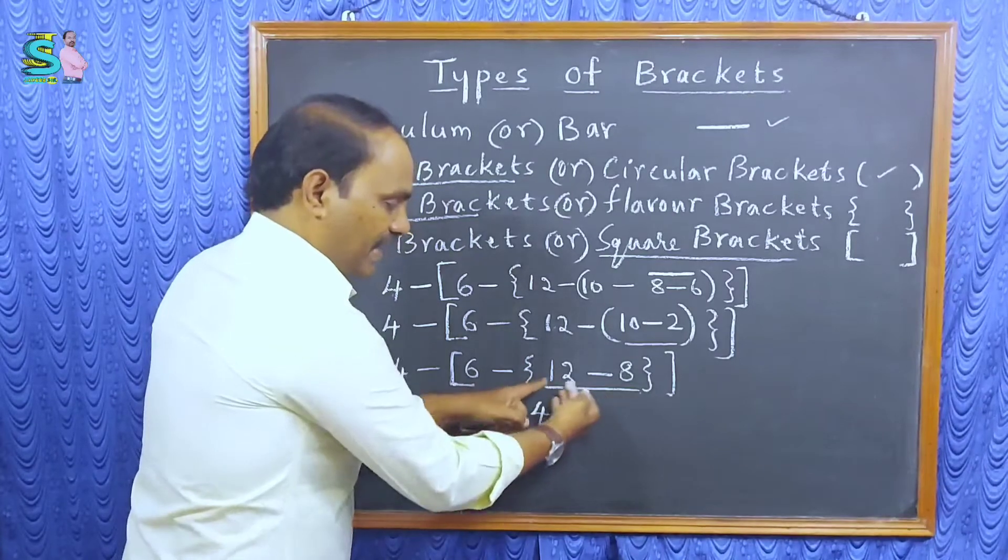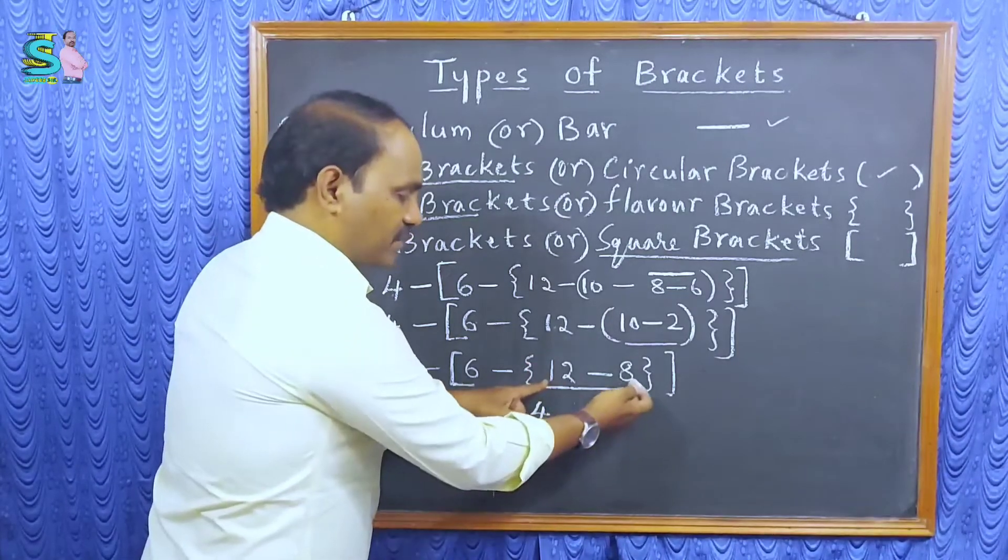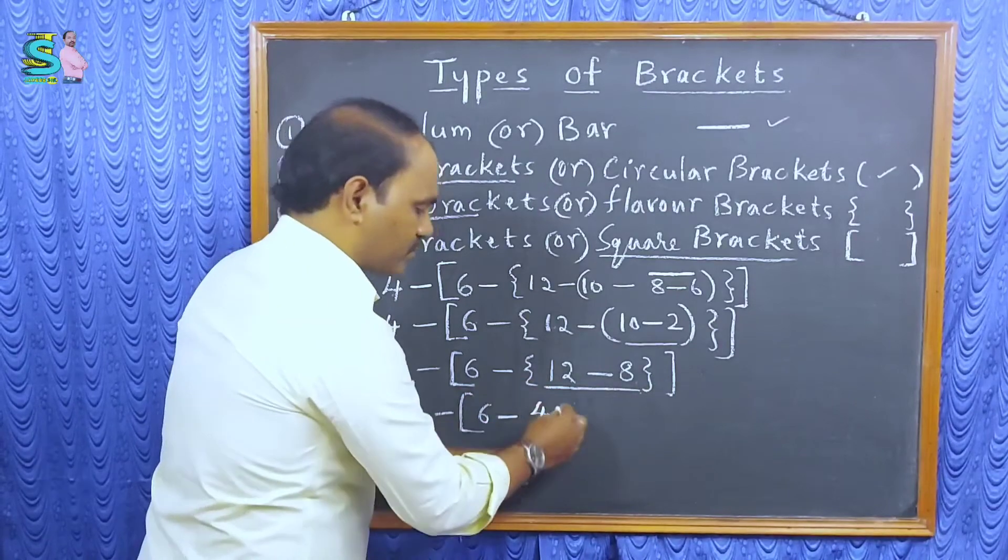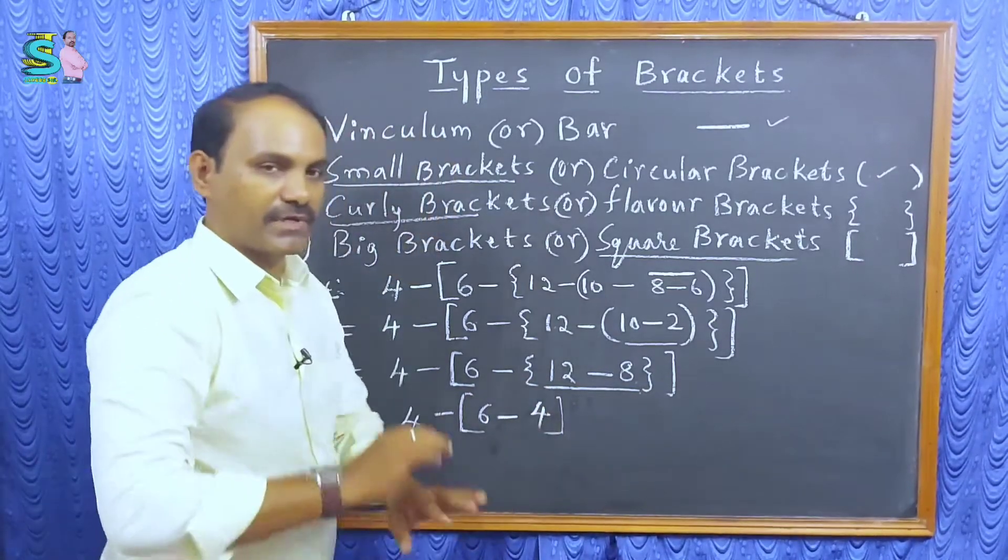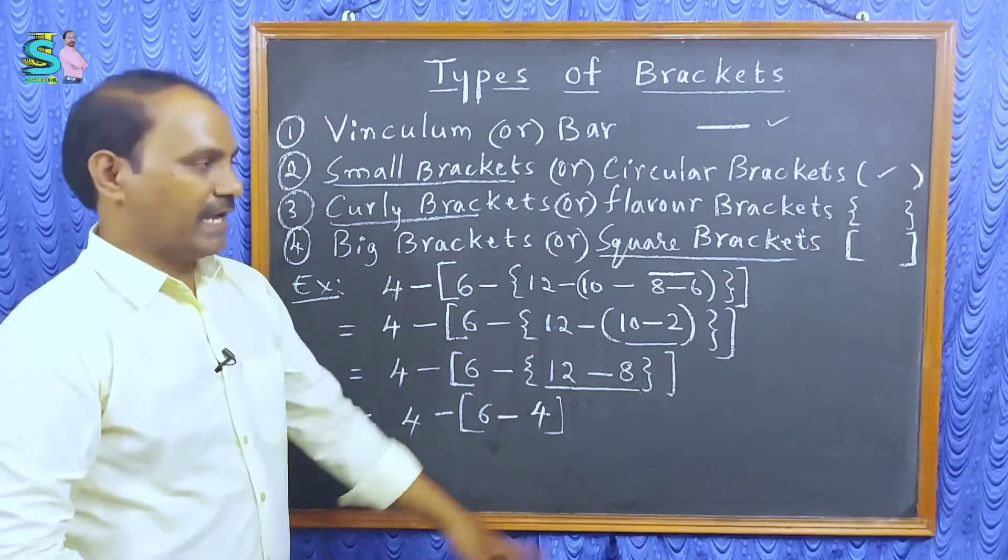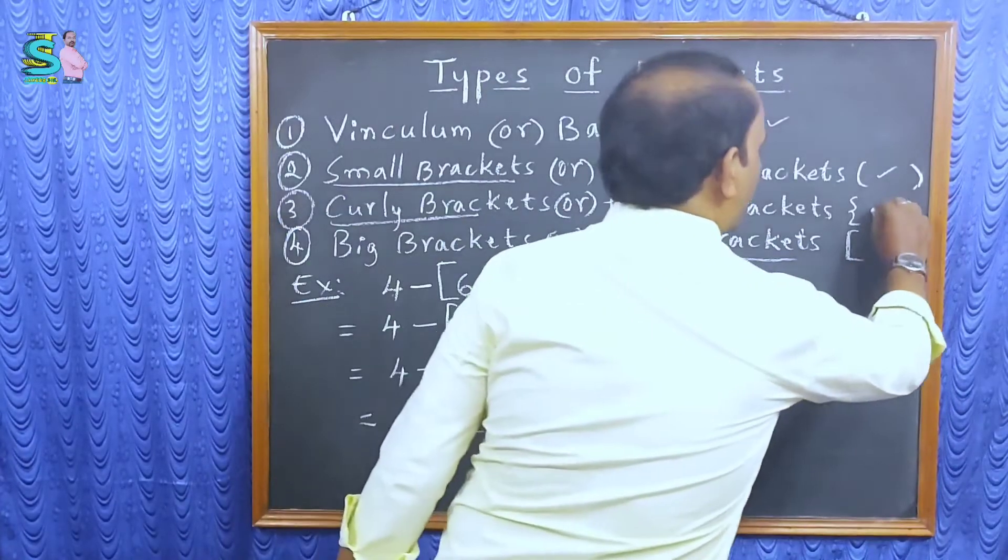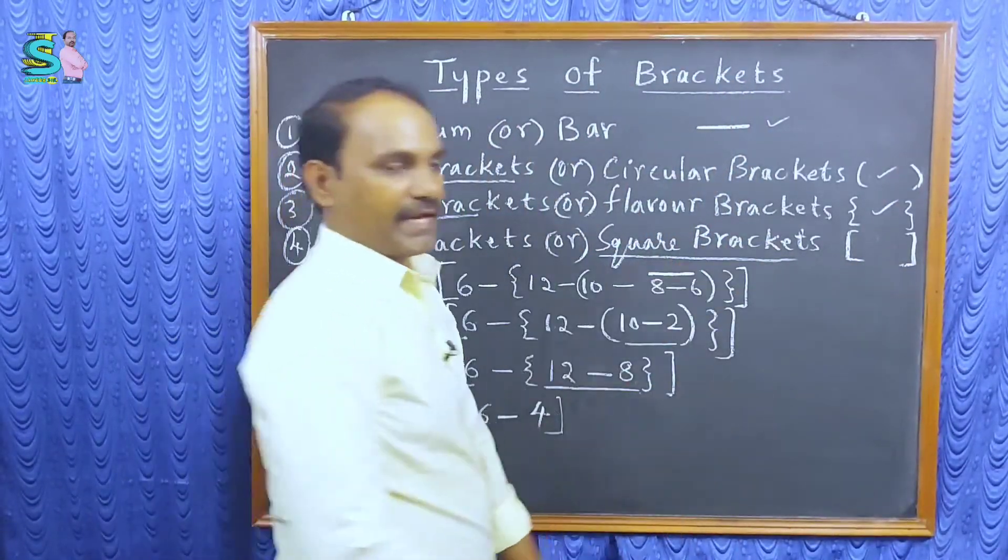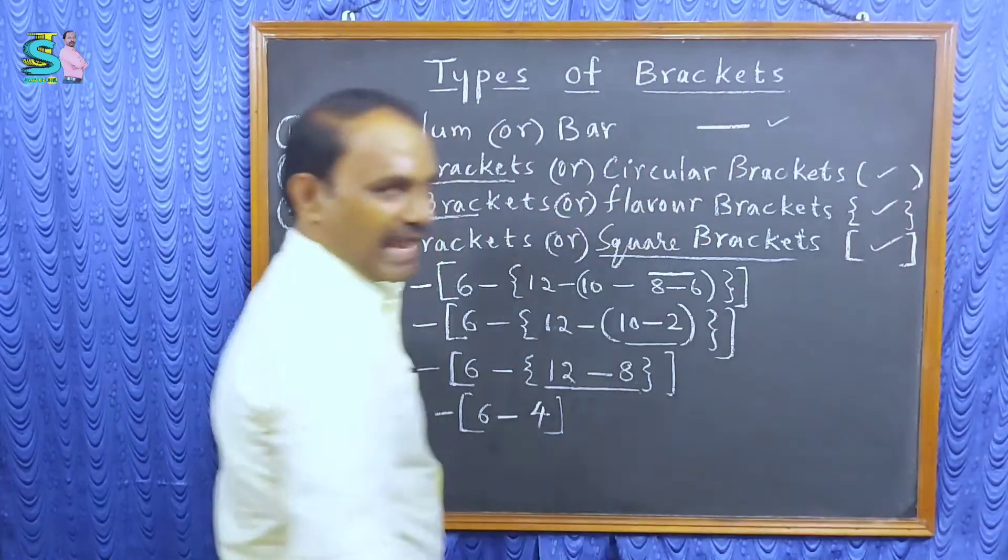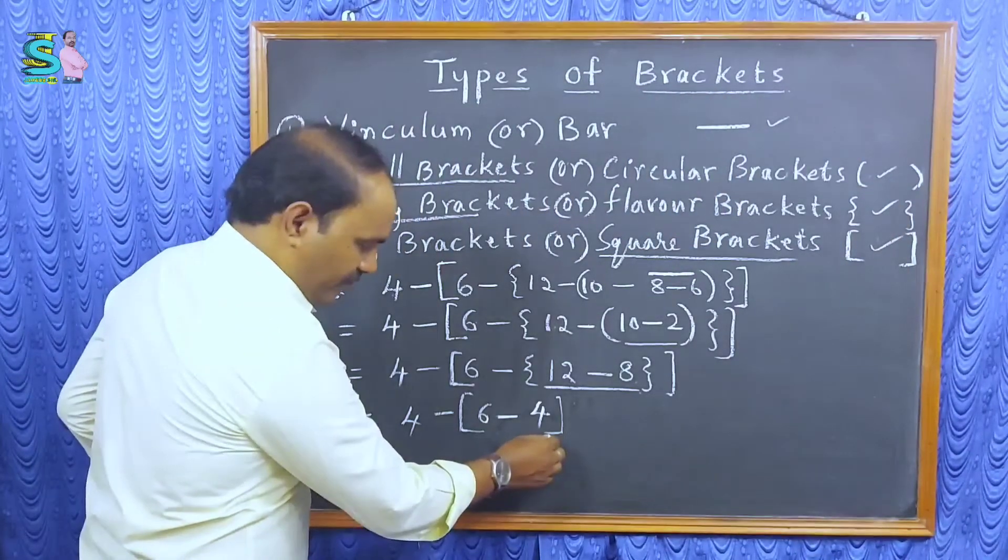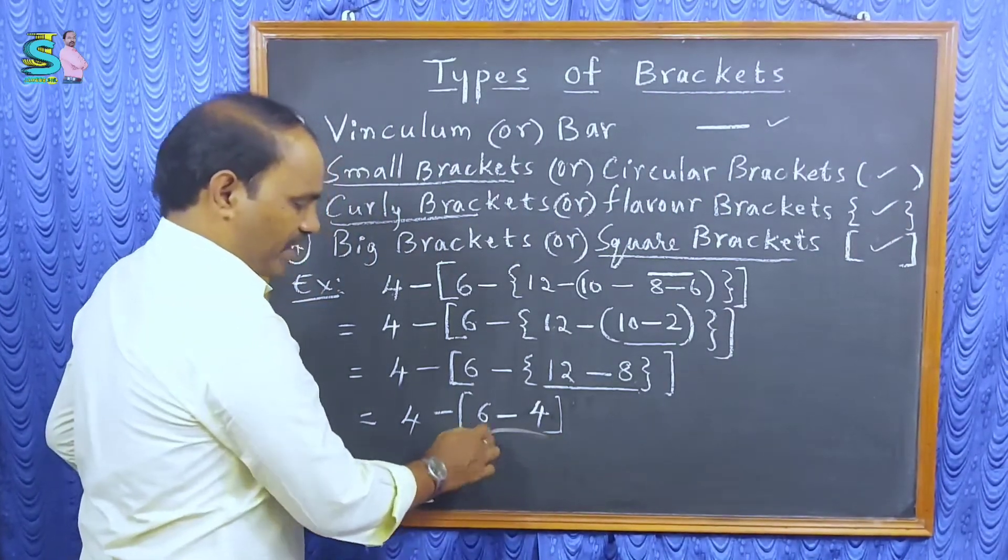Already, we have done the calculation in that brackets. 12 minus 8 is 4. So, this one is over, completed. And last, this one also completed. And last remaining bracket is square bracket. So, you can perform the operation which is in square bracket.